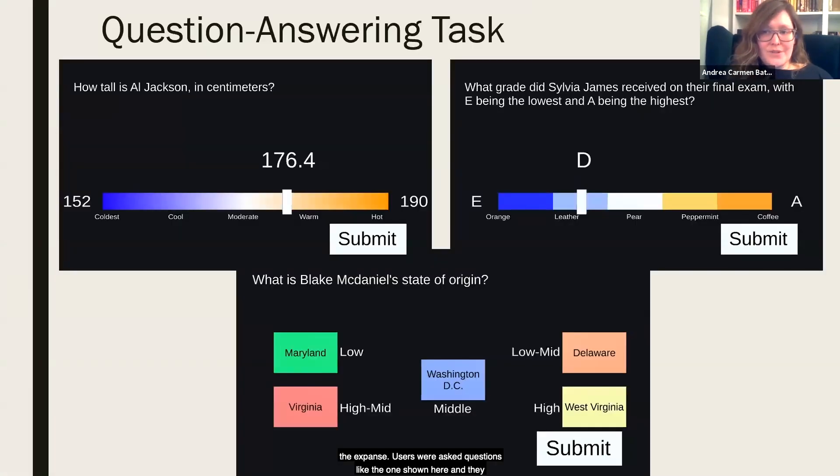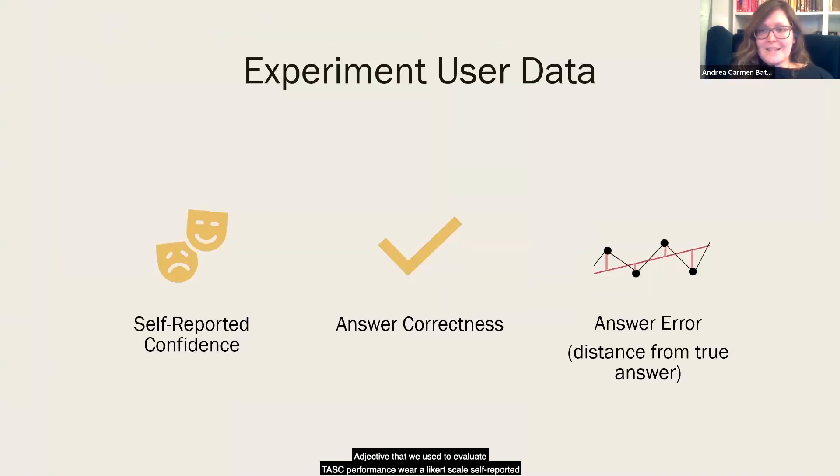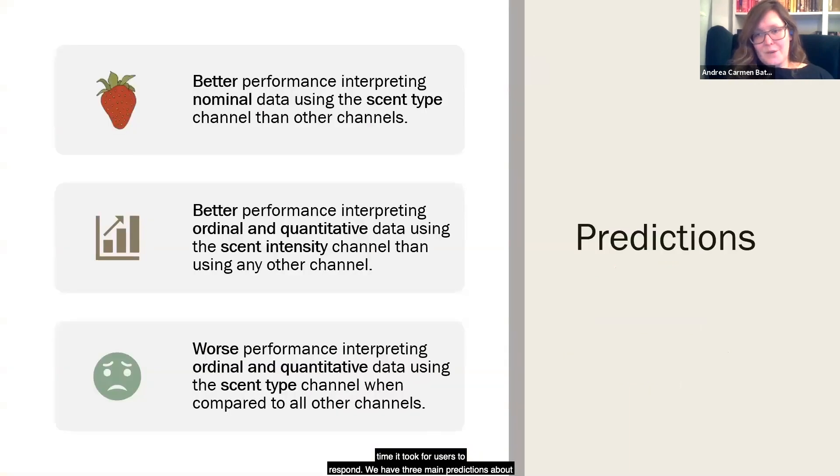Users were asked questions like the one shown here, and they could respond to quantitative questions by moving the continuous slider, ordinal questions by moving a slider that snapped to the nearest value, and nominal questions by clicking on the button. The data that we used to evaluate task performance were Likert scale self-reported confidence scores after each trial, a boolean measure of whether the answer was correct or not, the magnitude of the error where that was applicable, and these errors were normalized around a mean of zero, and also the amount of time that it took the users to respond to each question.